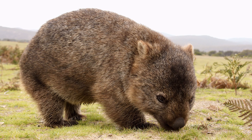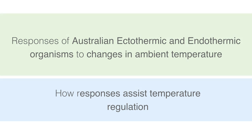This all sounds intimidating, but we promise that it is all pretty straightforward. There are also pictures of wombats later on, so there's that to look forward to. To start, let's split this dot point into two separate components. One: responses of Australian ectothermic and endothermic organisms to changes in ambient temperature. Two: how these responses assist temperature regulation.